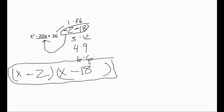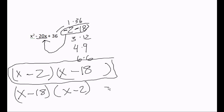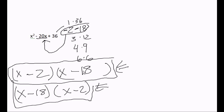Now the question is, what if I write it as (x - 18)(x - 2)? They are the same answer — it doesn't matter what order you put them in, just as long as the signs are correct with each one. Either order is correct; you can put x minus two first or x minus eighteen first. This was how to factor three terms. Thank you for watching.